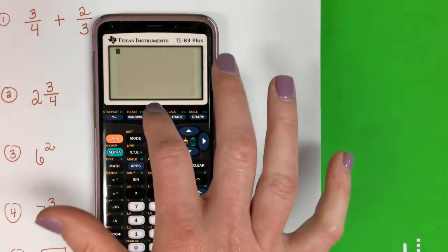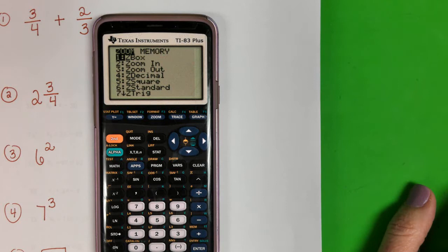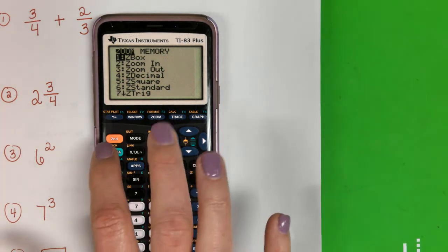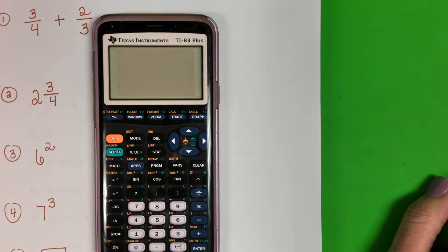Next to the second button it says mode, and notice in yellow up above it, it says quit. So let's say you get into a screen that you don't know how to get out of—I just pressed a random button—you can always hit second mode, second quit to get you out of that screen.